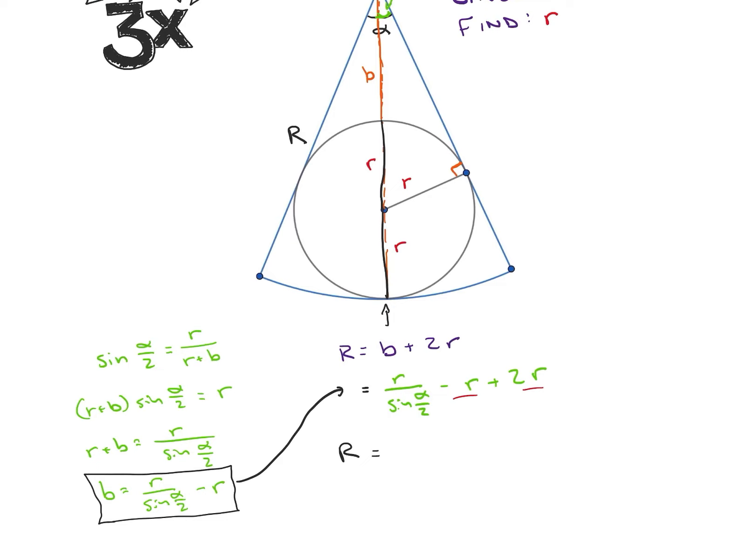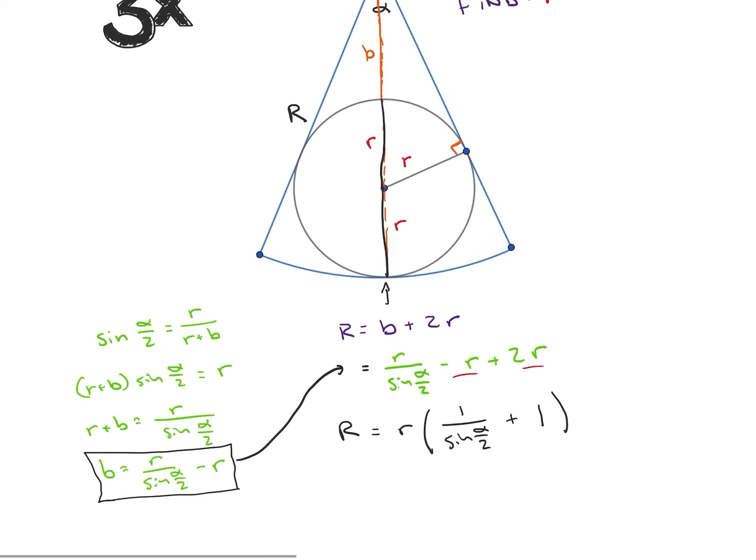So we have big R is equal to r and let's just factor out that r now it's going to be 1 over sine of alpha over 2 plus 1 because I factored out the r. Okay. So 1 over sine of alpha so because I just did minus r plus 2r so that's just plus 1r and I factor out the r.